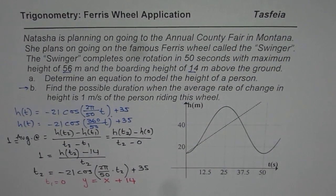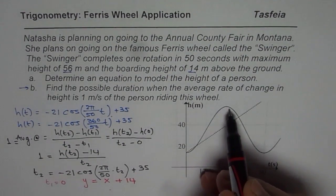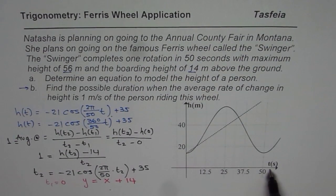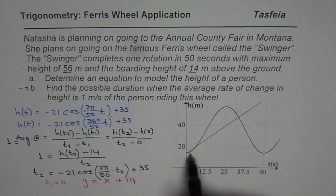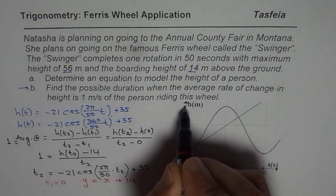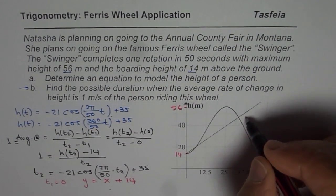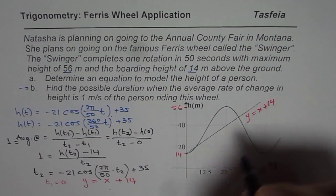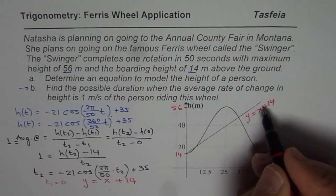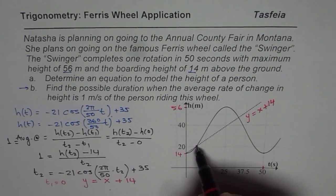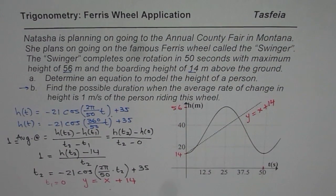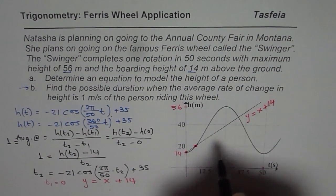Here is the graph representing the height of a person over time. In 50 seconds, one complete revolution is done. The minimum height is 14 meters and the maximum is 56 meters. The straight line I have drawn is y = x + 14, starting with a y-intercept of 14 and a slope of 1. If I consider any two points on this line, the average rate of change is going to be 1 — rise in meters over run in seconds.